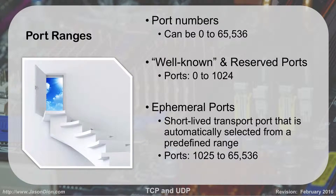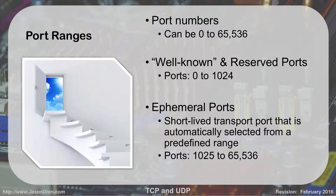Port ranges — for CompTIA you need to know port numbers. Our ports can range from 0 up to 65,536. We have what's called well-known or reserved port numbers, which are 0 to 1,024. The ones above 1,024, all the way up to 65,000, are called ephemeral ports — those are not already designated for another purpose, so you can use them as needed.